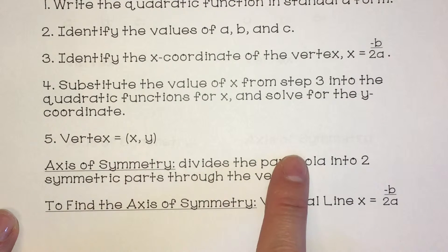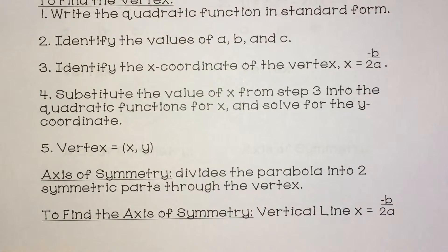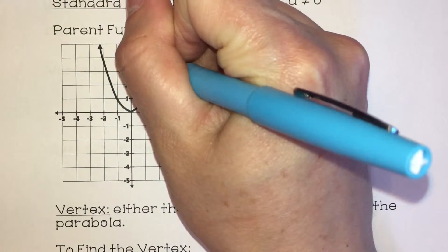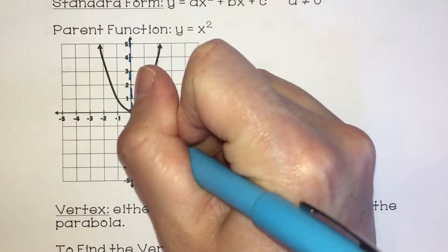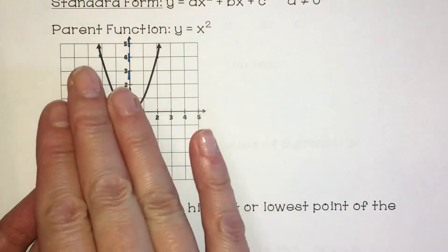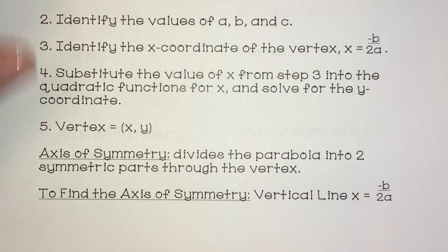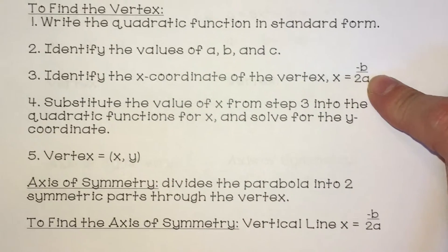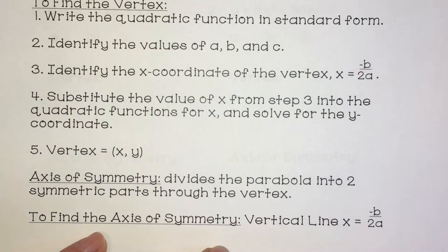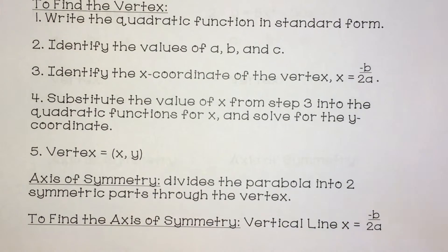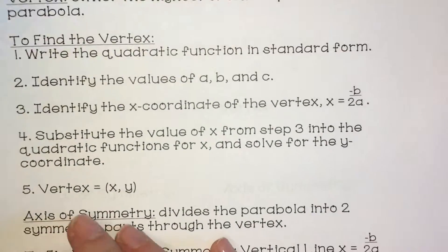The axis of symmetry divides the parabola into two symmetric parts through the vertex. It's a vertical line straight down through the vertex. See how it's symmetric — the two halves, if you folded it over, would fold right on top of itself. To find the axis of symmetry, it's the vertical line x equals negative b over 2a. You notice it's the same thing as the x-coordinate of the vertex because it goes through the vertex. The vertex is a point, whereas the axis of symmetry is an actual line — slightly different, but you use the same formula to find them.